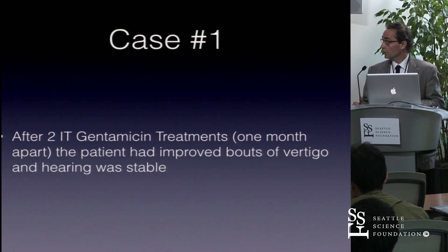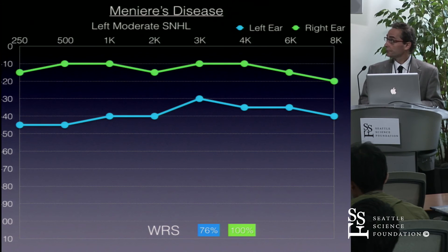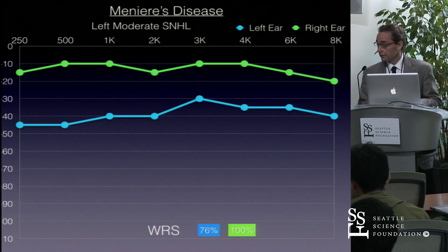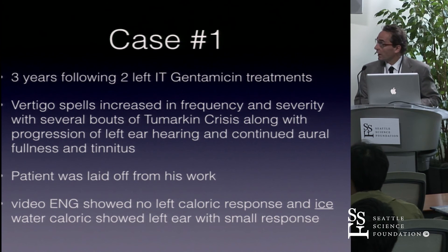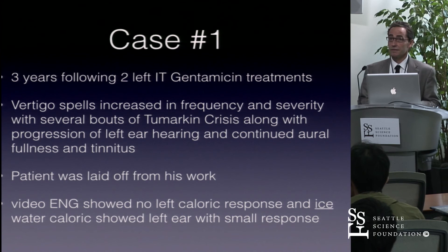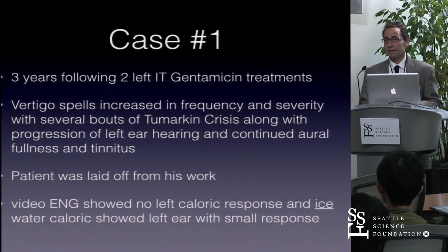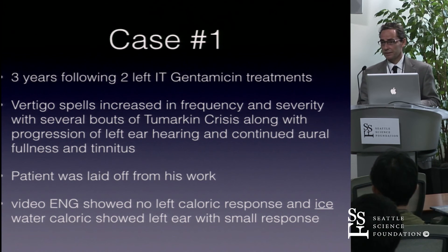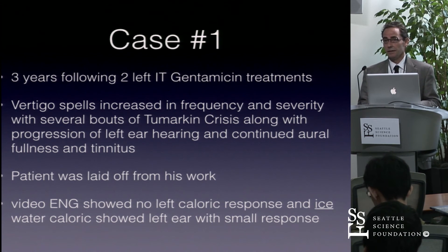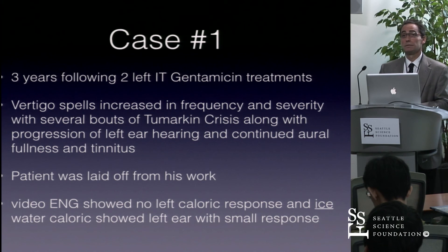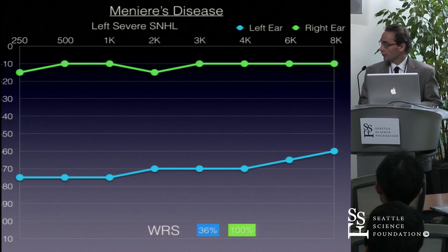This patient had two intratympanic gentamicin treatments one month apart and had improved bouts of vertigo with stable hearing — showing moderate hearing loss with relatively unchanged word recognition. Three years later, the patient had received two left intratympanic gentamicin treatments total, and vertigo spells started to increase in frequency and severity, with several bouts of drop attacks along with progression of left hearing loss and continued aural fullness and tinnitus. The patient was laid off of work. VNG showed no caloric response, though ice water caloric testing showed a small response.